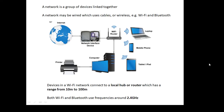A network is a bunch of devices linked together. A network may be wired, using cables, or wireless — for example, Wi-Fi and Bluetooth are wireless. With Wi-Fi, you need a router, and devices connect to a local hub or router. The range of Wi-Fi is from 10 meters to 100 meters. Wi-Fi and Bluetooth use approximately the same frequencies, about 2.4 gigahertz — strictly speaking radio, but very close to microwave.